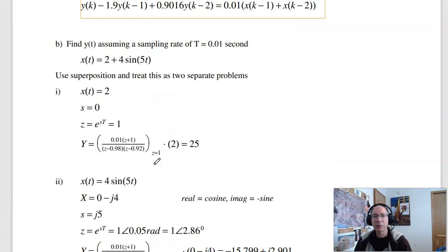If I want to find out what's the output, I want to have a constant and a sine wave. Same thing we did in the s-plane. Treat that as two problems. I have DC and AC. At DC, x equals 2, s is zero. Conversion from the s-plane to the z-plane is e to the st. So if s equals zero, z is one. Here's the gain of DC. Times the input of DC is the output of DC. Twenty-five.